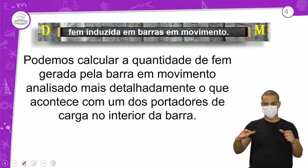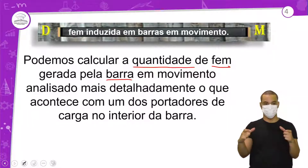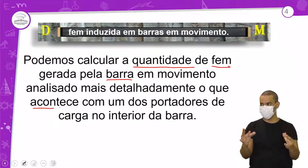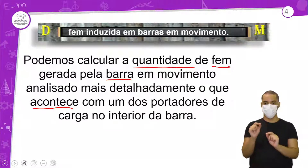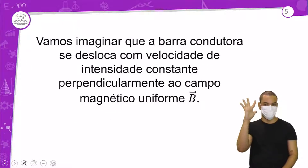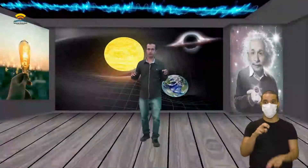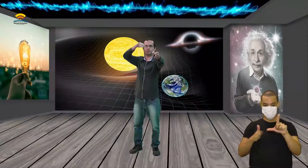A FEM induzida em barras em movimento: podemos calcular a quantidade de FEM gerada pela barra em movimento, analisando mais detalhadamente o que acontece com um dos portadores de carga no interior da barra. Vamos imaginar que a barra condutora se desloca com velocidade de intensidade constante, perpendicular ao campo magnético. O campo magnético está saindo da tela em direção a você. Quando falar perpendicular, é um ângulo de 90 graus — vai estar se movendo de cima para baixo ou de baixo para cima.